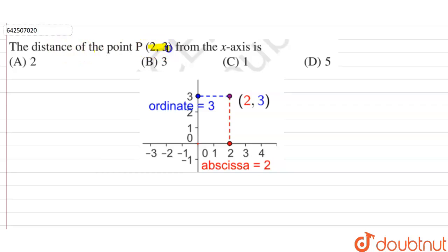Right, so P is 2 comma 3. 2 comma 3 means 2 denotes the x-coordinate or the abscissa and 3 denotes the ordinate or the y-coordinate.